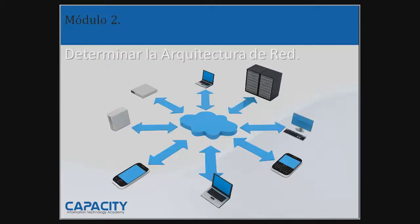Esta decisión de determinar la arquitectura de red va de la mano con los dos puntos anteriores: la elección del hardware del servidor y del protocolo de almacenamiento. Por ejemplo, para que una organización seleccione un equipo de forma rápida, puede encontrarse con limitaciones en el número de tarjetas de interfaz de red, o NIC, o tarjeta de red como normalmente le decimos, que pueden ser compatibles con un modelo específico o no. Esto afecta a la forma en que la implementación de vSphere se integrará con la red.